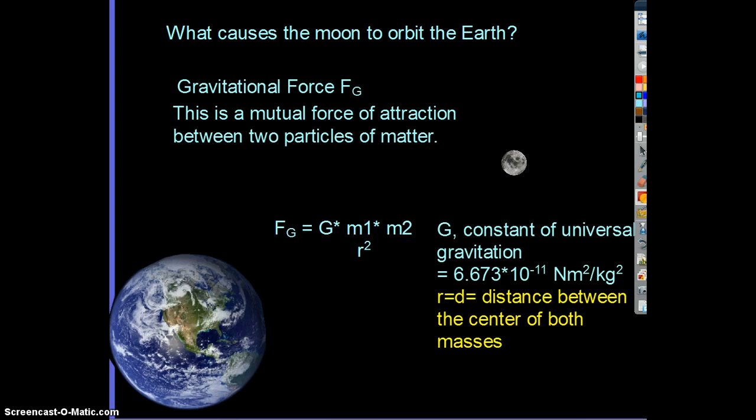It shouldn't be R, it really should be diameter. Because in reality, it's not half the distance between the Earth and the moon. It's the entire distance between the center of mass of the Earth and the center of mass of the moon. You always have to calculate from center of mass to center of mass. This is extremely important.